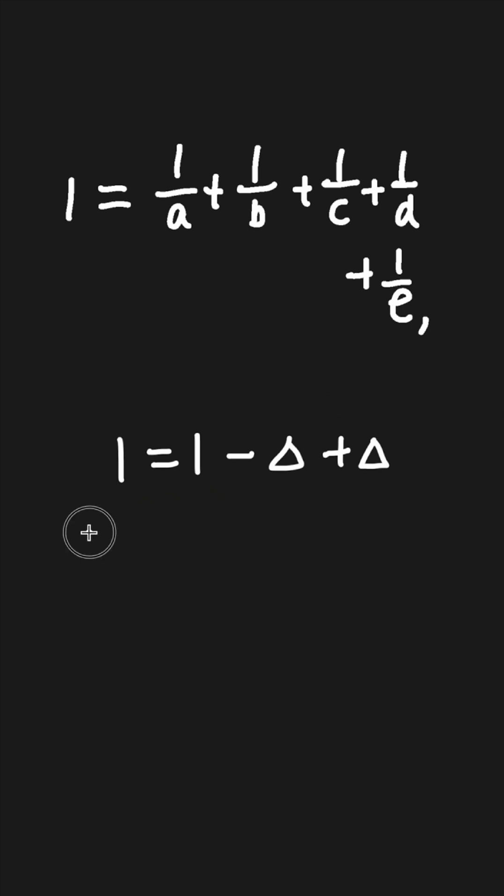How about we separate one into a sequence of numbers like this? One minus one over two, plus one over two, minus one over three, plus one over three, minus one over four, plus one over four, minus one over five, plus one over five. This actually equals one because you take the number away and then add it back.